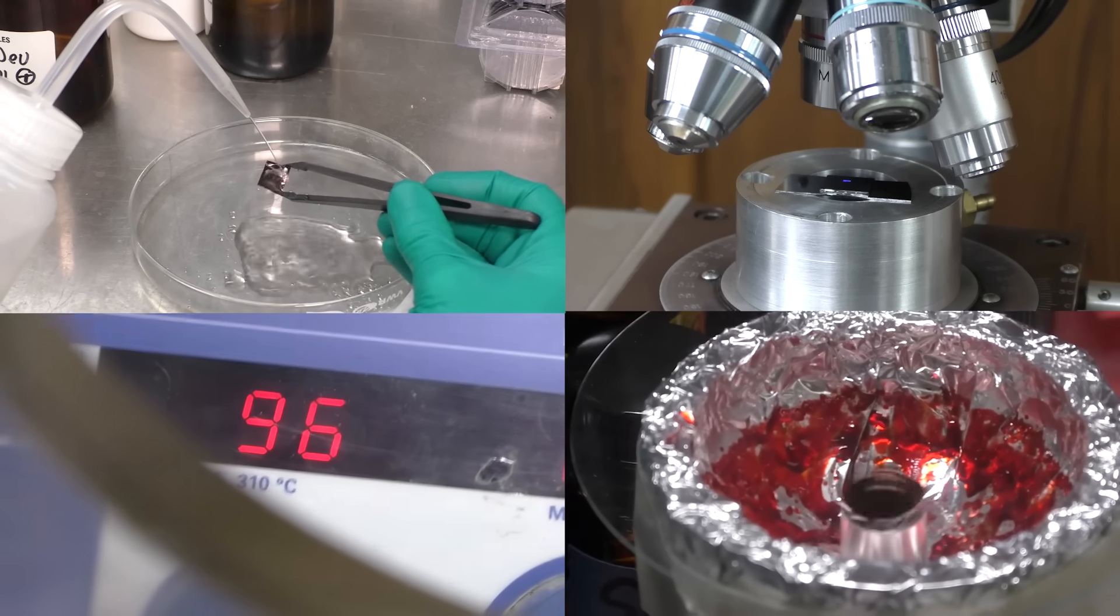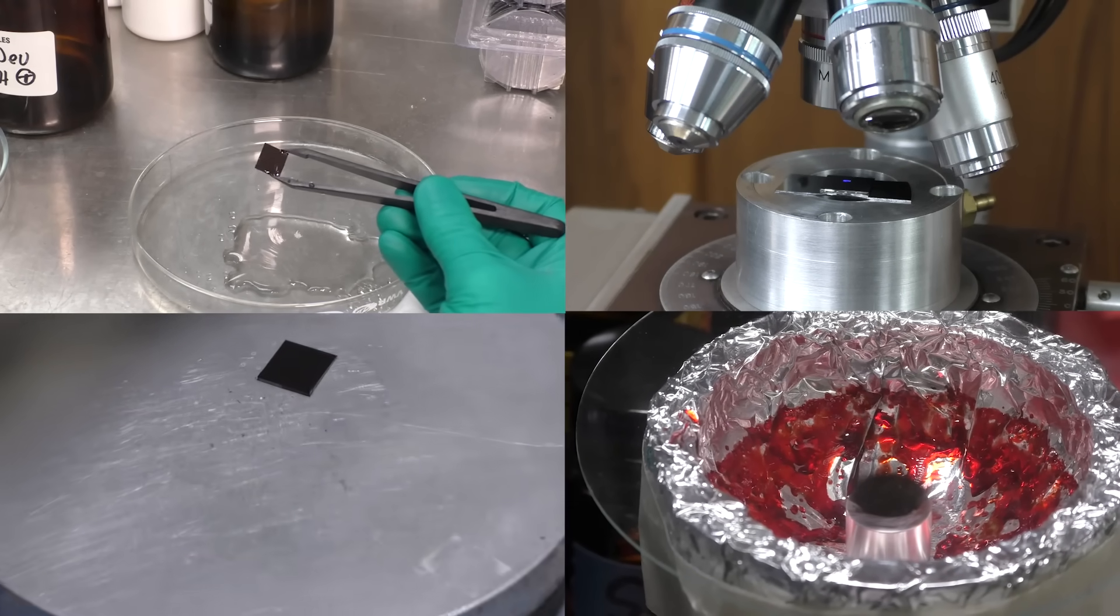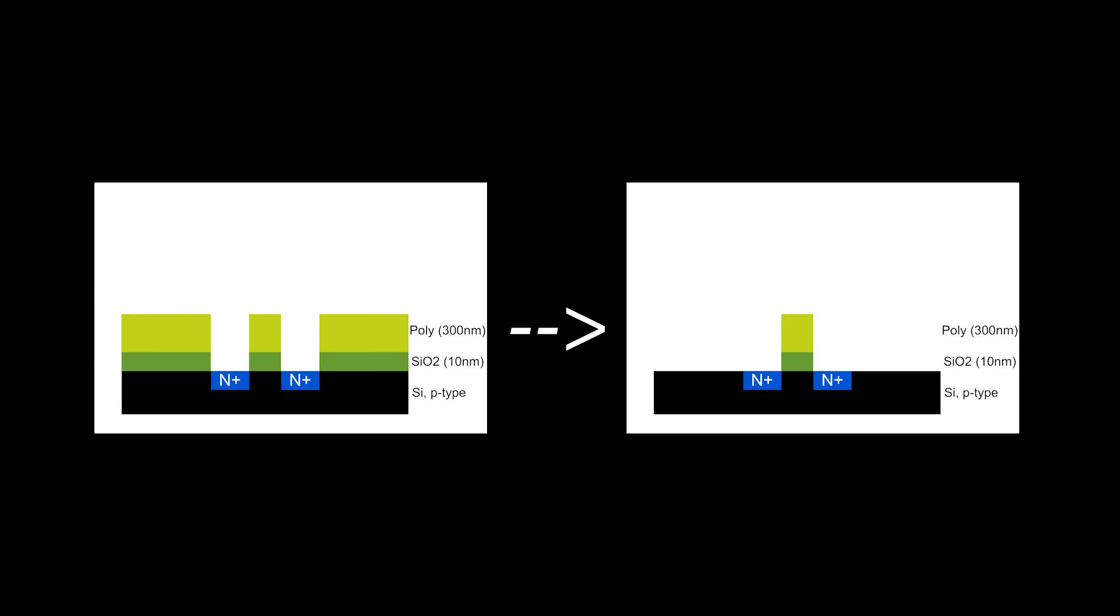The process of spin coating photoresist, baking it, exposing it, and developing it is then repeated exactly twice, once for the gate layer, and then again for the contact. The gate is etched just like we did before with the polysilicon etchant, and the contact layer has to be etched as well,